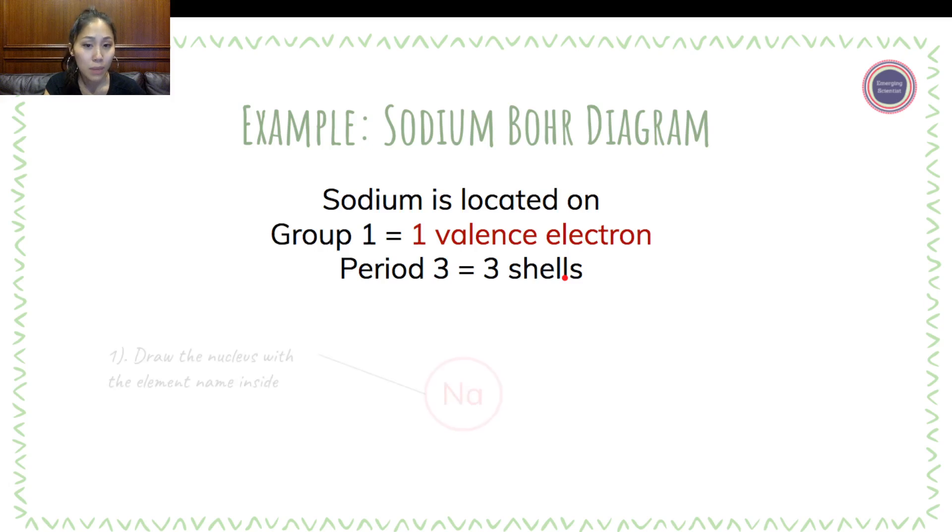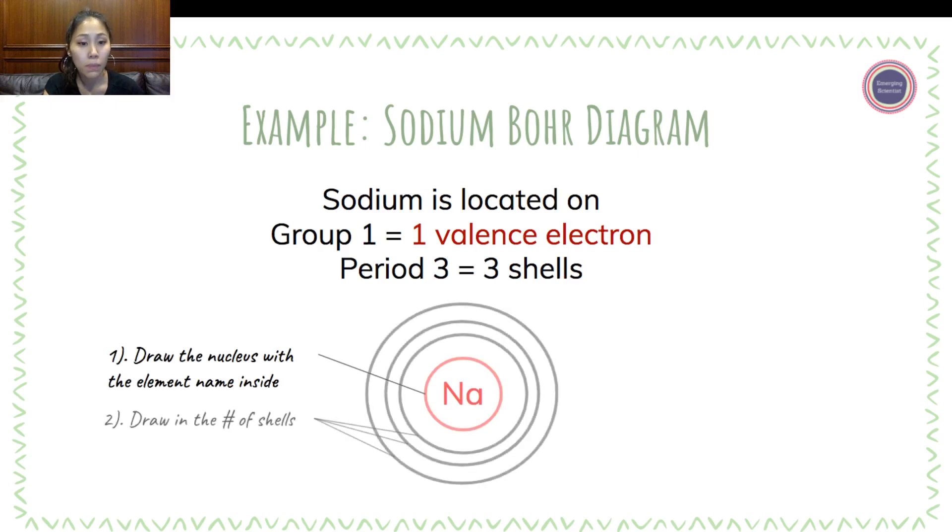Using the four-step method again, we draw the nucleus with the element name inside. Sodium has the element symbol Na. We draw in the number of shells. There are three total shells, so one, two, three.